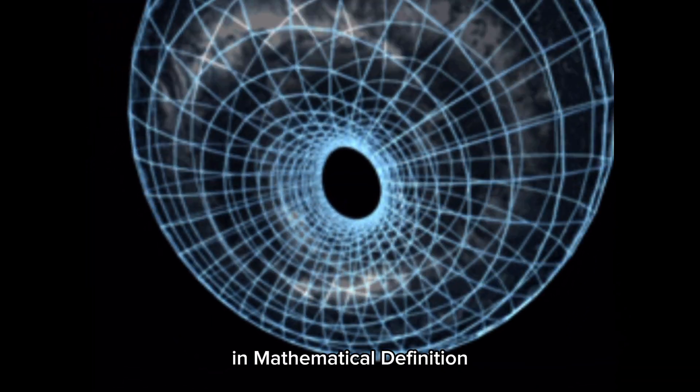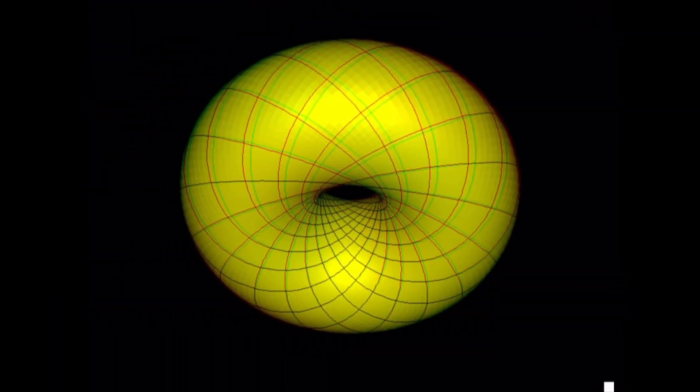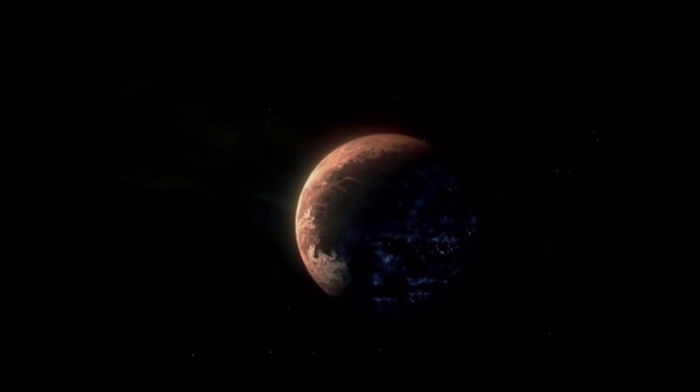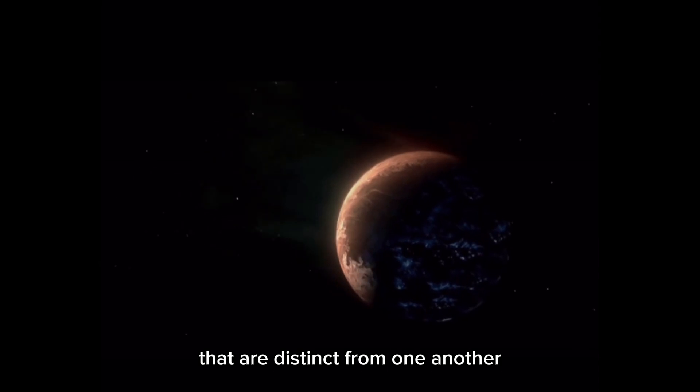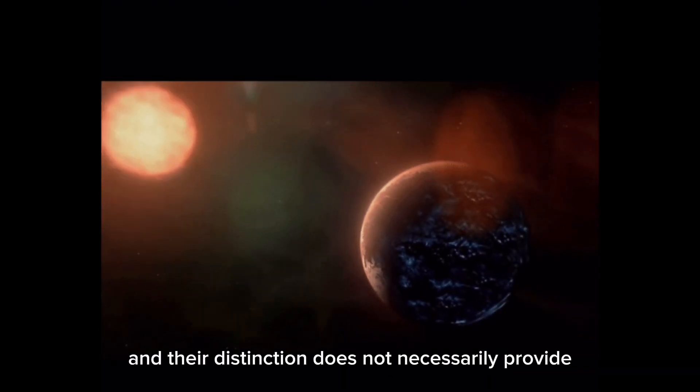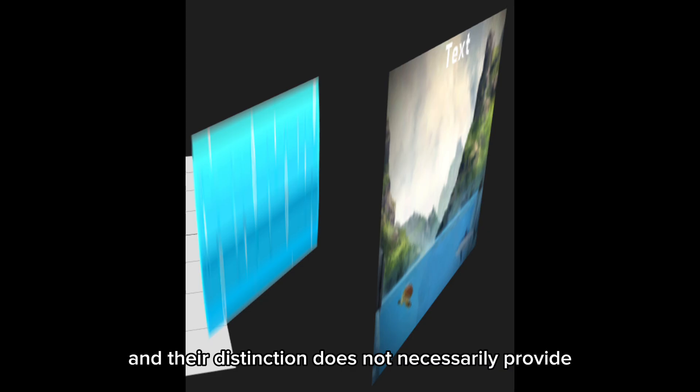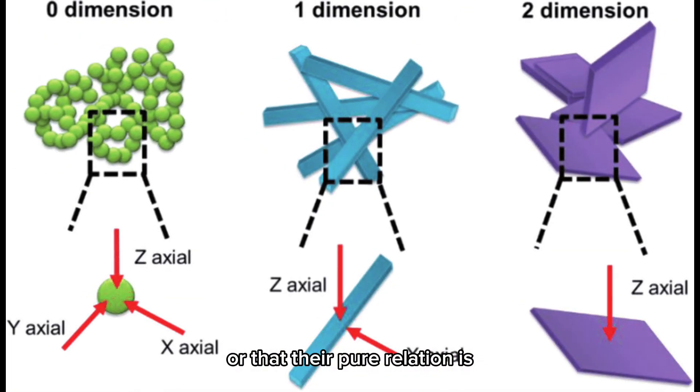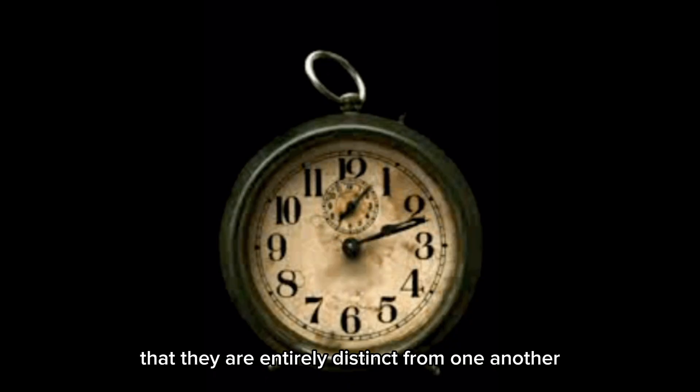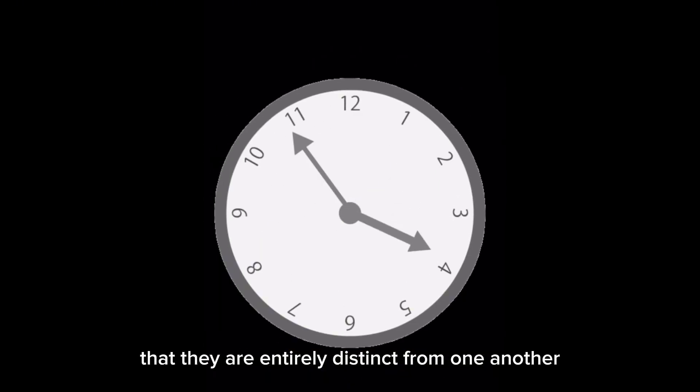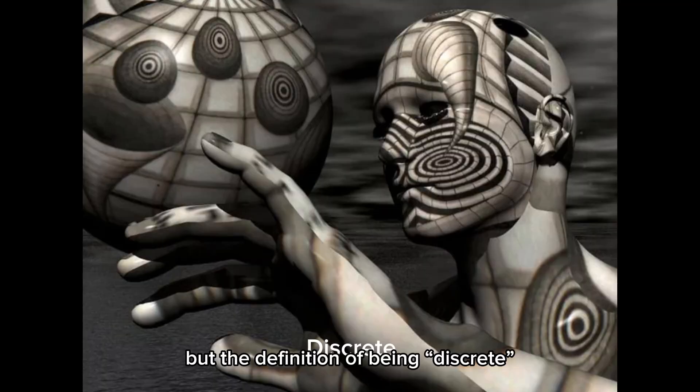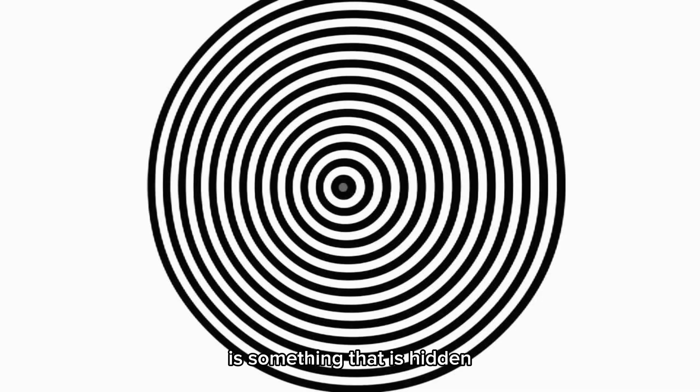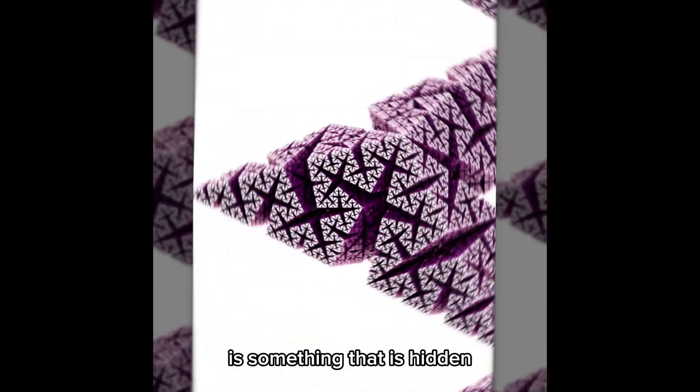When we say discrete in mathematical definition, we mean that there are two points or two values that are distinct from one another, and their distinction does not necessarily provide a discernible relation, or that their pure relation is that they are entirely distinct from one another. But the definition of being discrete in just common language is something that is hidden, something that is not obvious, something that is implicit.